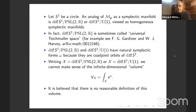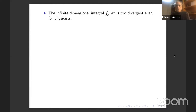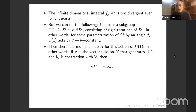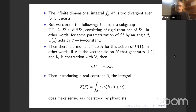Diff(S¹) mod PSL(2,R) is sometimes called universal Teichmüller space. Both homogeneous spaces have natural symplectic forms because they can be viewed as coadjoint orbits. Since they can be treated similarly up to a certain point, I'll call either of them curly X. As symplectic manifolds, you can ask if their volume makes sense, but it's believed that this volume has no reasonable definition — that infinite dimensional integral is considered too divergent. But there's something we can do which is almost as good.